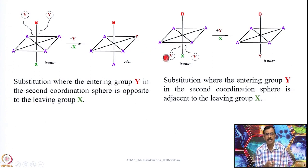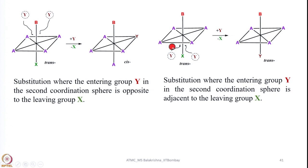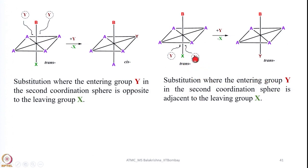On the other hand, if we consider the same trans compound and the entering ligand is in the same position or very nearby the leaving group, there is no net change in geometry — a trans compound would give a trans compound. So substitution where the entering group Y in the second coordination sphere is opposite to the leaving group gives cis, while substitution where Y is adjacent to the leaving group gives a trans compound.